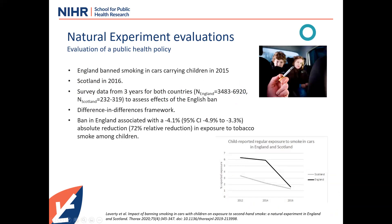A more recent example I've been involved in is the ban on smoking in cars in England, implemented in 2015 and in Scotland in 2016. We used a difference-in-differences framework. You can see that exposure of children in cars was going down in both Scotland and England, but over the period of the ban it went down quite a bit more in England, giving us more confidence that the approximately 4% reduction in tobacco smoke exposure is truly the effect of that ban and not something else occurring at the same time.